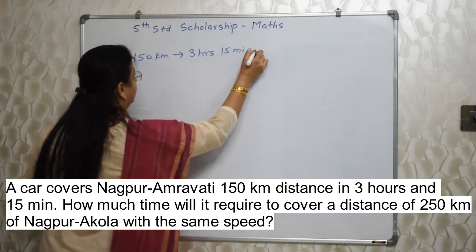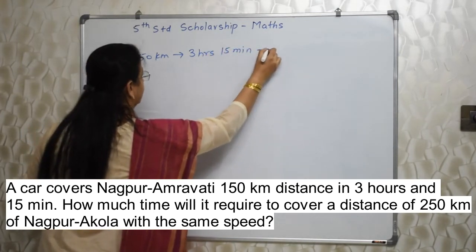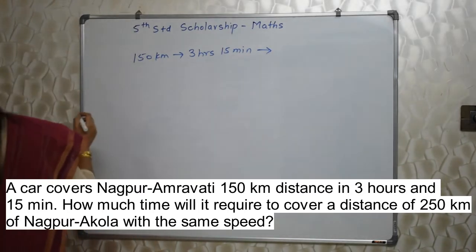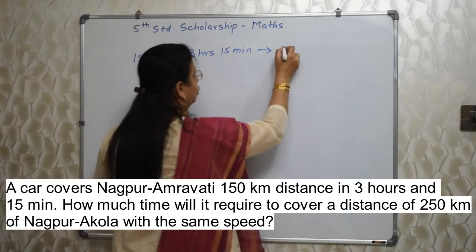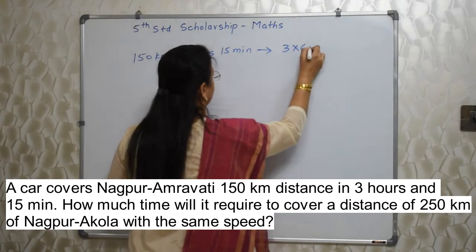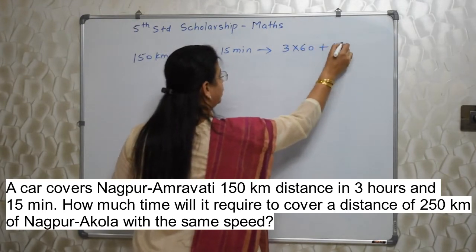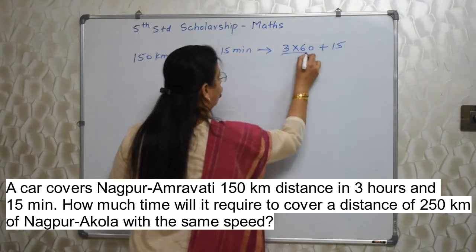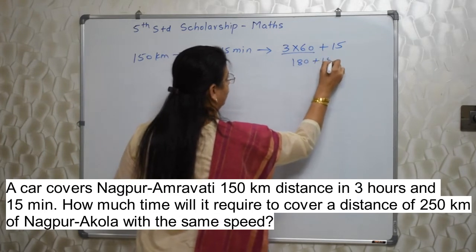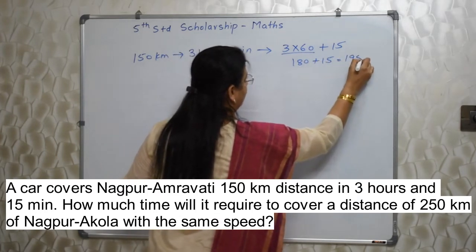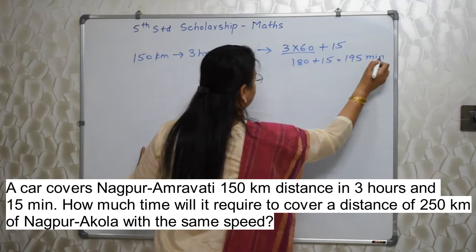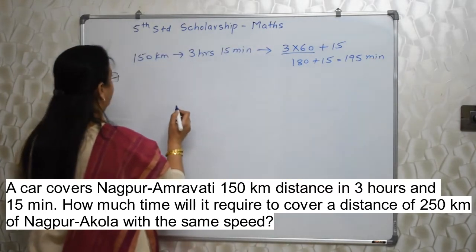First, I will suggest you to convert everything into minutes. 3 hours means 3 into 60 minutes, and these are 15 minutes only. So 180 plus 15 is 195 minutes. So 3 hours 15 minutes means 195 minutes.